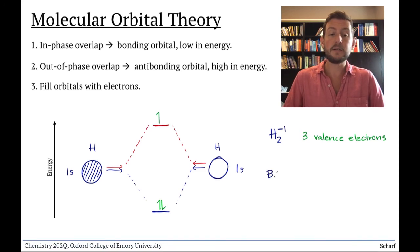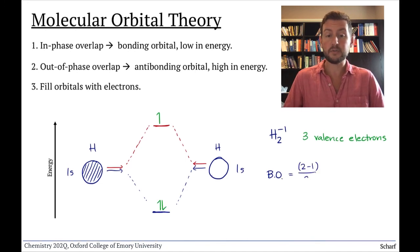If we calculate the bond order now, we see that it's 2 minus 1 over 2, or 1 half. There's only half a bond, much weaker than a single bond. So, we can infer that this ion isn't very stable.